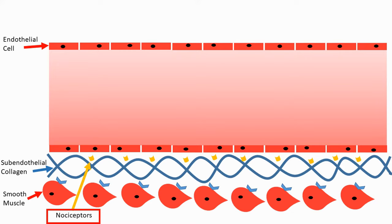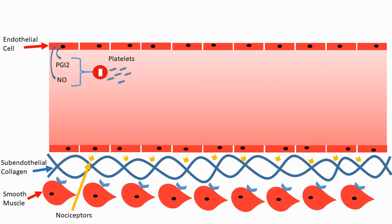The endothelial cells release substances called PGI2 and nitric oxide. PGI2 can also be referred to as prostacyclin. Together, PGI2 and nitric oxide inhibit platelets from activating, preventing formation of the platelet plug and thereby inhibiting the blood from coagulating. Another protein released by the endothelial cells is called heparan sulfate.